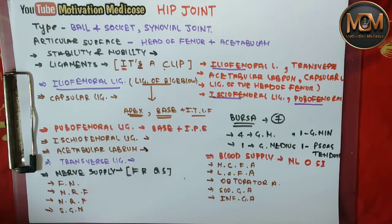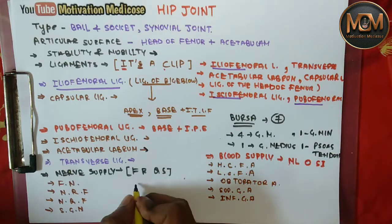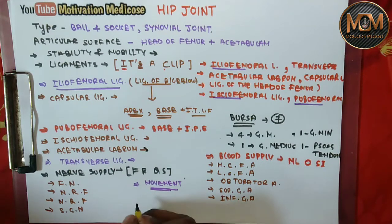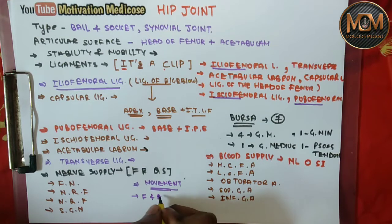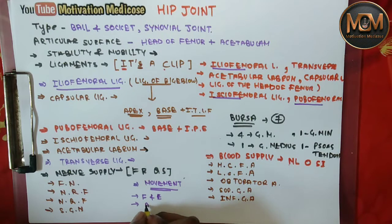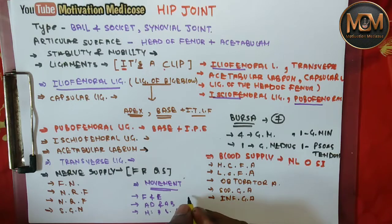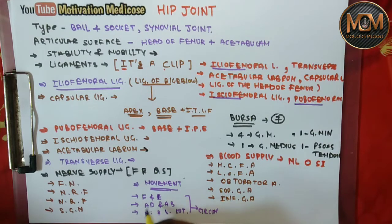Now let's talk about the movements of the hip joint. We have flexion and extension, adduction and abduction, and medial and lateral rotation seen at the hip joint. The last movement is circumduction, which is the combination of all these movements showing circumduction at the hip joint.